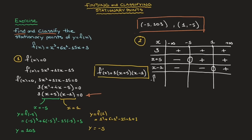In the last row I write f'(x). Since f'(x) = 3(x + 5)(x − 1), its sign is the product of the signs in the rows above. At x = −5 and x = 1, f'(x) = 0. Between −∞ and −5: positive × negative × negative = positive. Between −5 and 1: positive × positive × negative = negative. For x greater than 1: positive × positive × positive = positive.